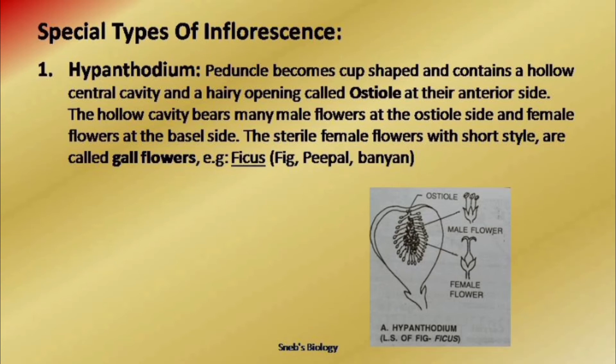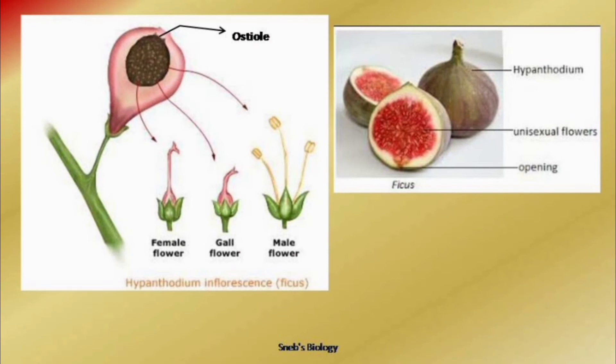Hypanthodium inflorescence is found in the Ficus variety. We can take the example of fig, which is Ficus carica. In this type, the axis to which the flowers are attached becomes a thick, vase-like or flask-like structure. Look at the diagram — there is the receptacle or axis on which the flowers are attached.